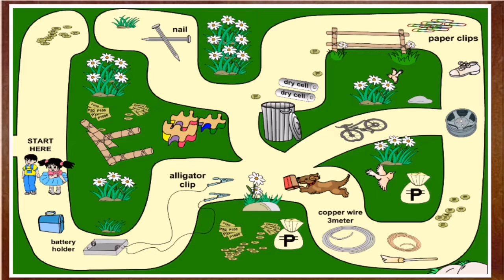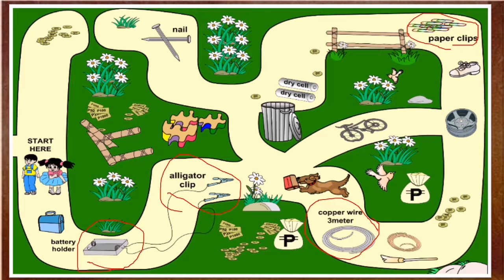For the first one, we have the battery holder, and of course it is connected with the alligator clip. Then we have the copper wire — a 3-meter copper wire. We also need these clips, and we also need the dry cell for our electromagnet. And for the last one, we have the nails, which will serve as the core of the electromagnet. These are the things that you are going to need when you make your electromagnet.